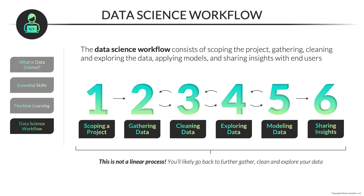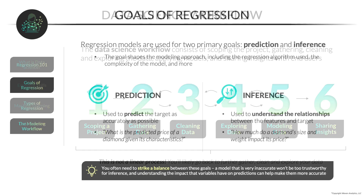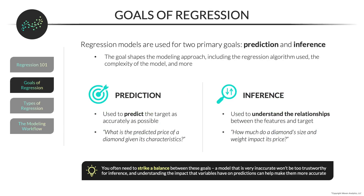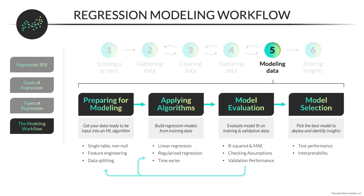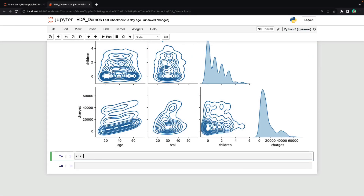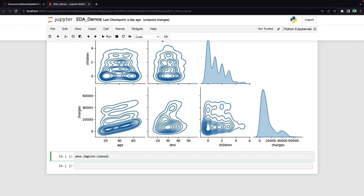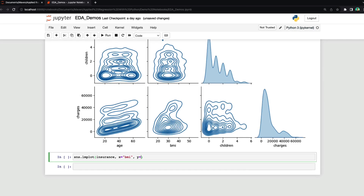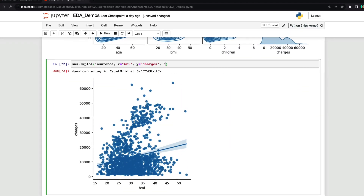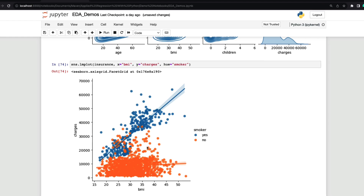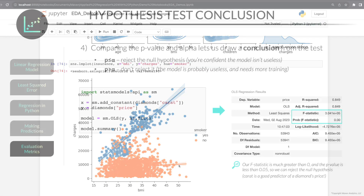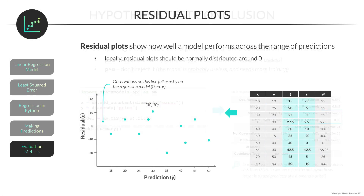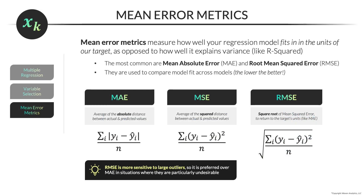We'll start by reviewing the data science workflow, discussing the primary goals and types of regression analysis, and do a deep dive into the regression modeling steps we'll be using throughout the course. You'll learn to perform exploratory data analysis, fit simple and multiple linear regression models, and build an intuition for interpreting models and evaluating performance using tools like hypothesis tests, residual plots, and error metrics.